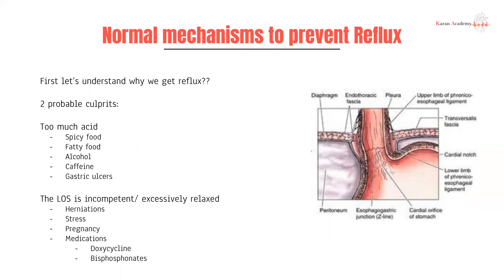You can also have incompetence of the lower esophageal sphincter, where it's not constricting as much as it should, allowing gastric contents to pass upwards. Things like paraesophageal herniation are common causes. Stress and pregnancy are significant factors, because increased intra-abdominal pressure pushes the esophagus up and prevents it from contracting adequately. Medications like doxycycline and bisphosphonates are notorious for causing issues at the lower esophageal sphincter due to their role with smooth muscle, and can also cause esophagitis.